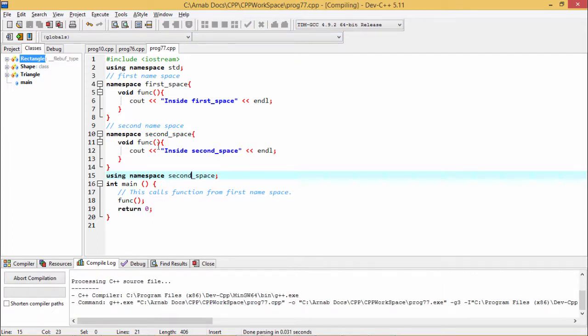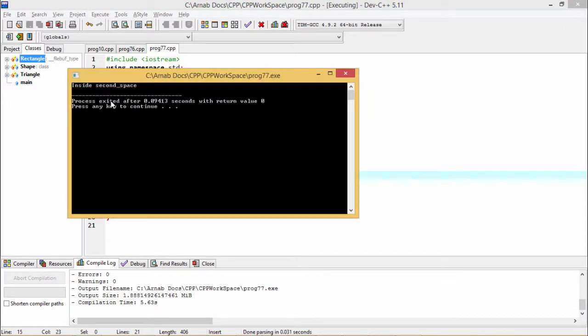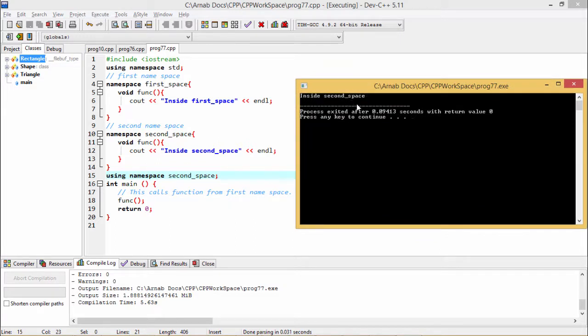Then we are expecting that this particular function FUNC is supposed to get executed and inside second space, this message is getting printed on the screen on the console.